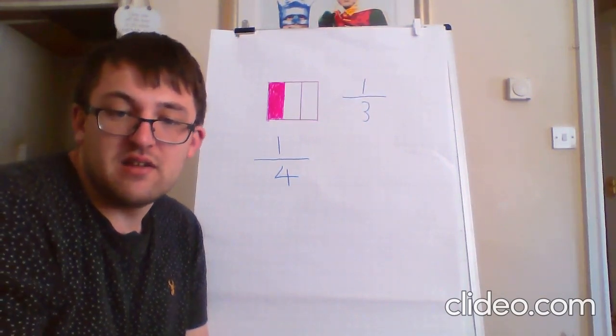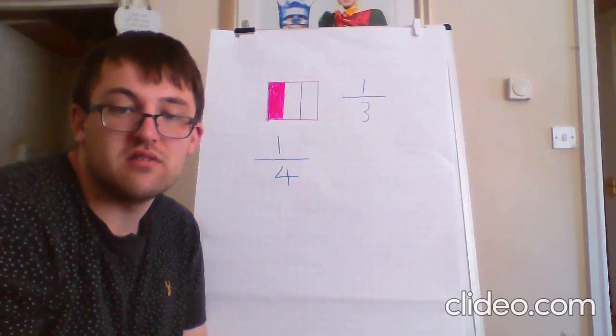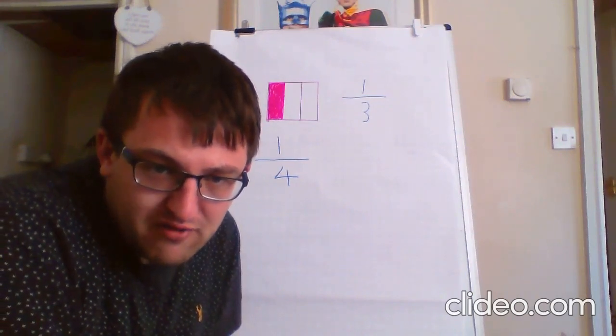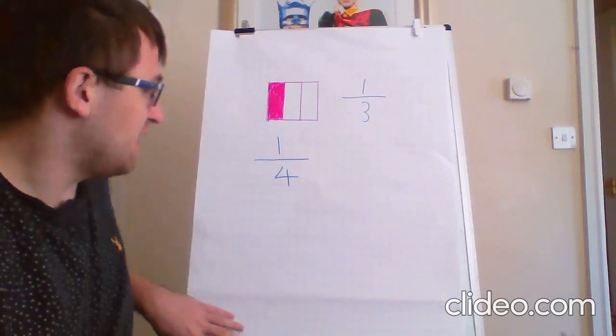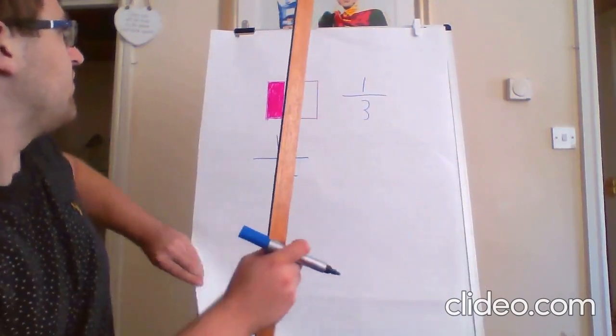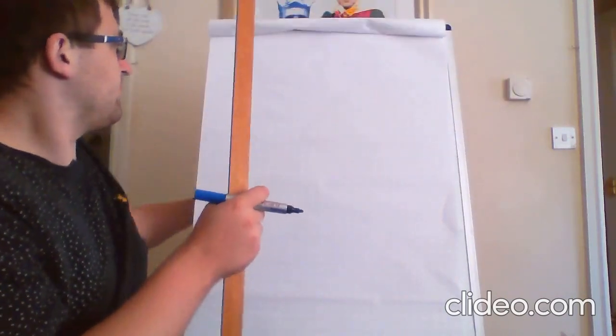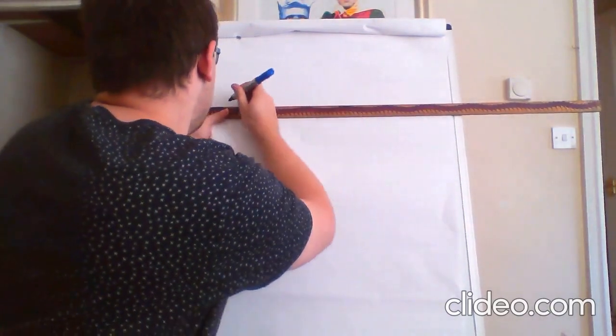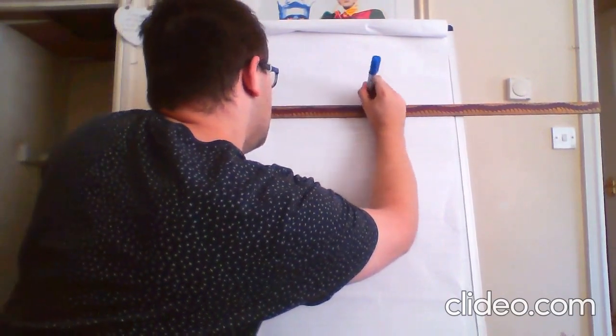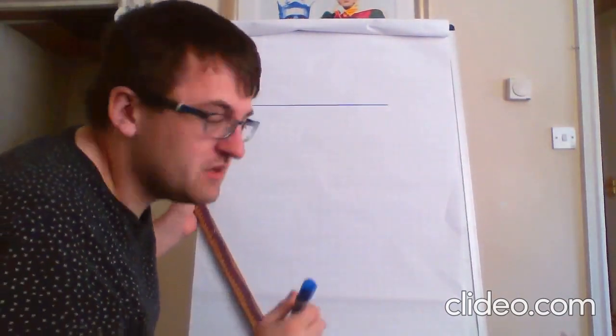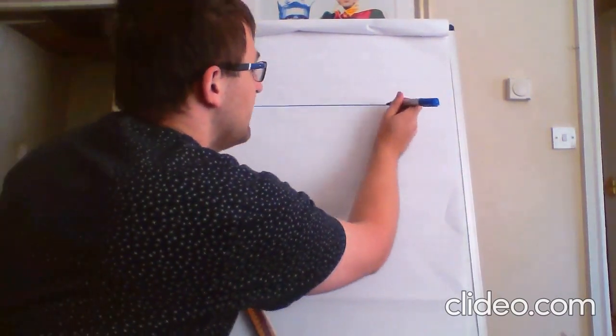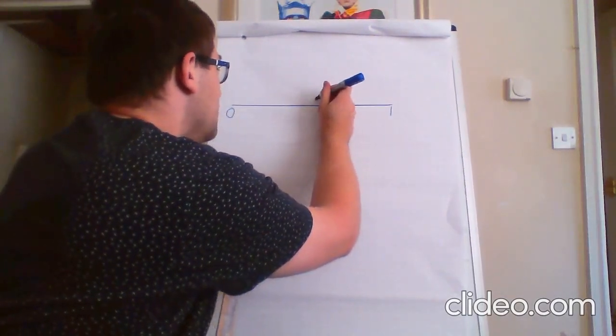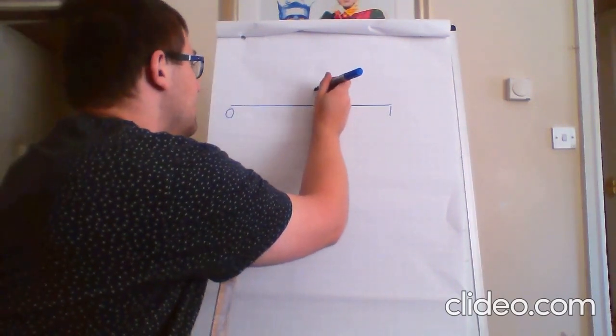Now, the second part of your task asks you to look at what fraction is shown by each letter. Okay? So, I'm going to draw number one on my board. Using my ruler to make sure it's nice and straight. And my starting point is going to be zero.